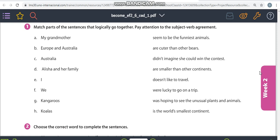So page 81 exercise one, match parts of the sentences that logically go together. Pay attention to the subject verb agreement, right? So let's pay attention to the first sentence here. My grandmother is the subject, my grandmother. So if it's my grandmother, it's in the third person, right?